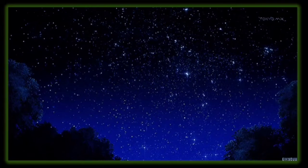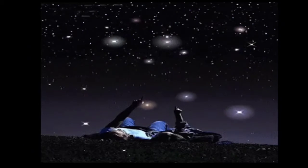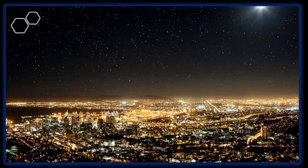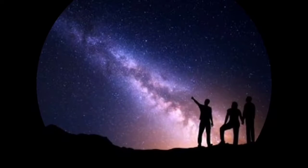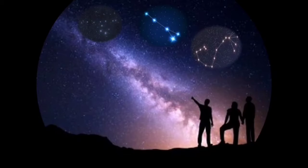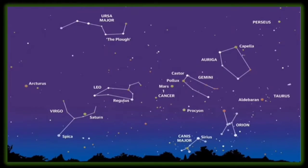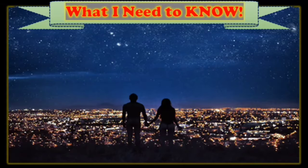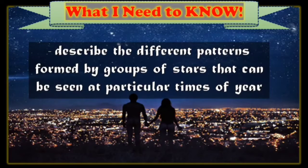Take a close look at this picture. Have you had a chance to look at the night sky such as this? If you look up the clear night sky from a dark location far away from city streetlights, you may be able to see thousands of stars. What have you observed about the group of stars? Were there familiar patterns that you noticed? What shapes did you see? So at the end of this lesson, class, you will learn to describe the different patterns formed by groups of stars that can be seen at particular times of year.